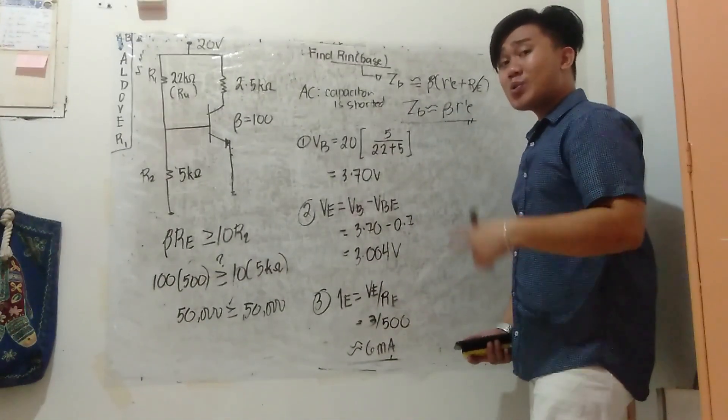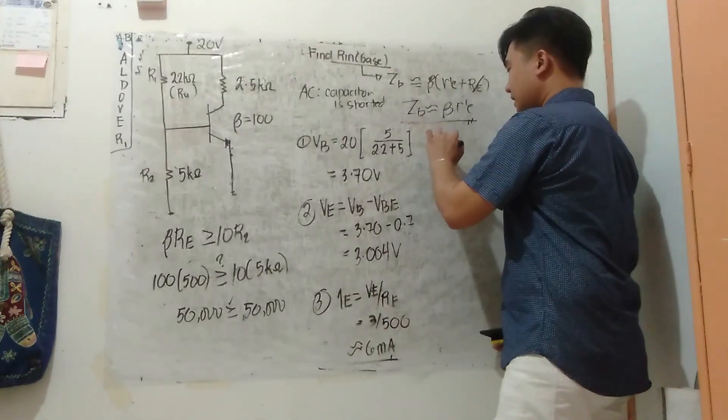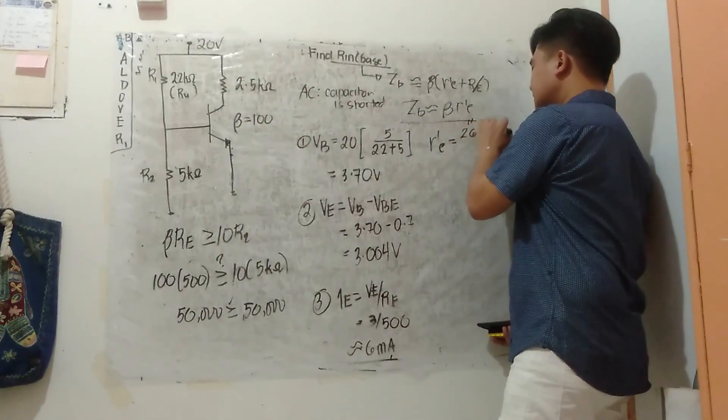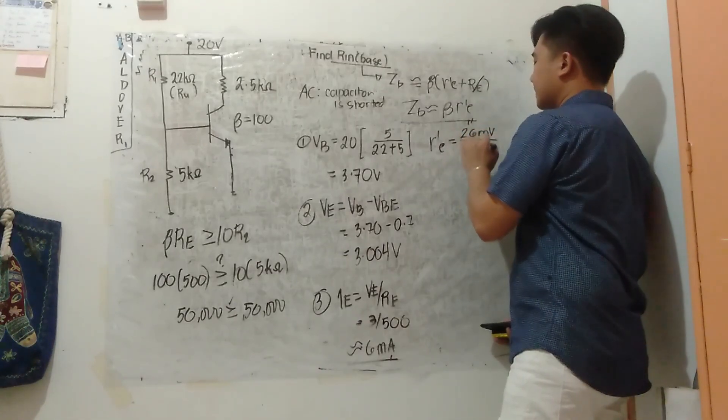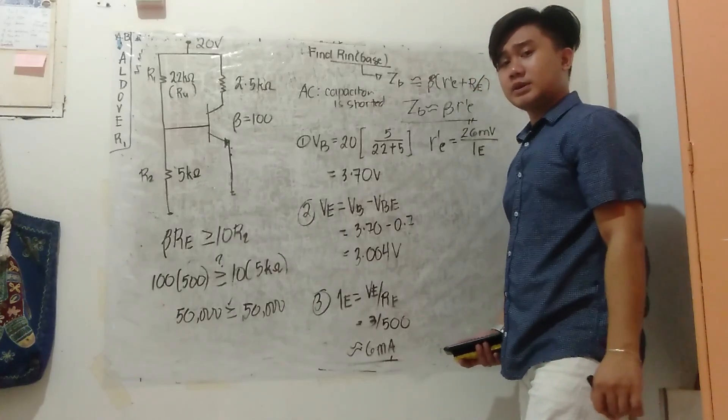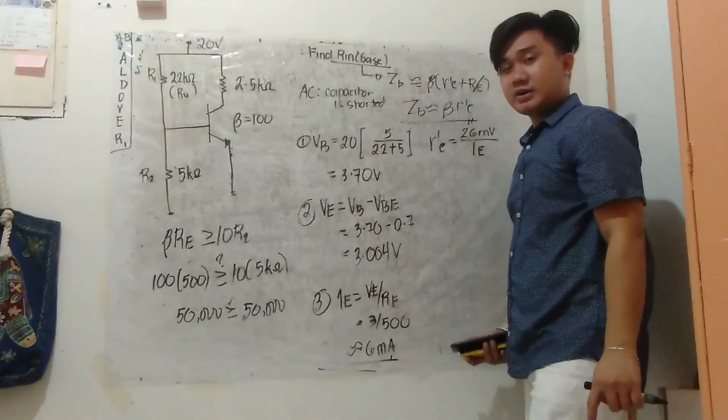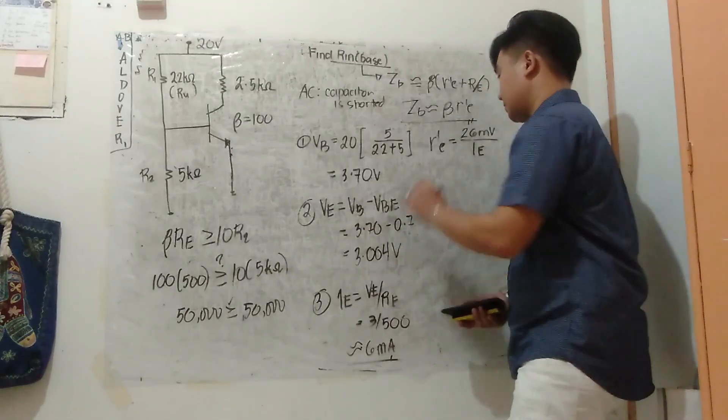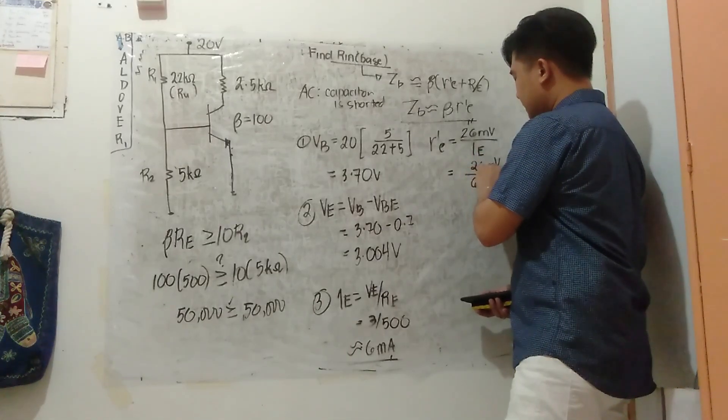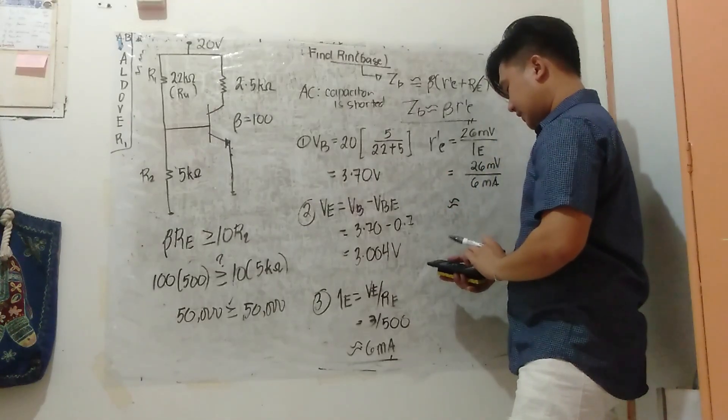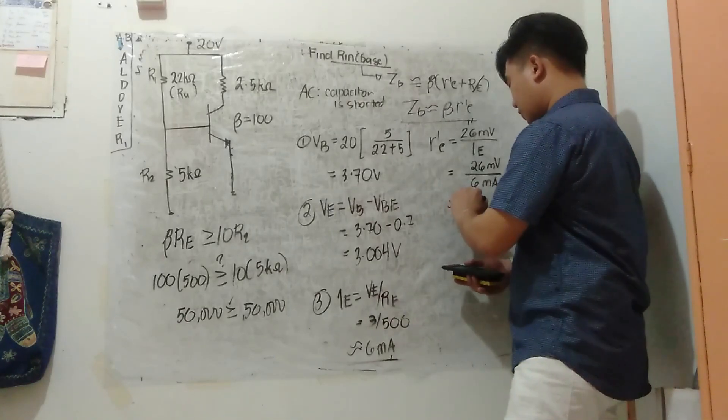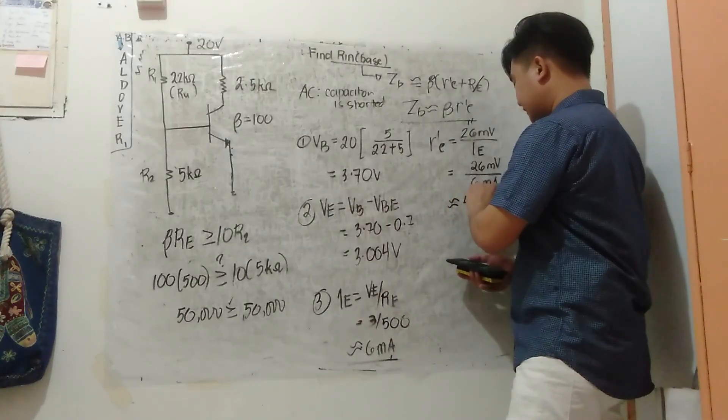When I have IE, I can find R'E. R'E is the AC resistance of the emitter, and that equals 26 millivolts over IE. Now guys, if you're using old versions of Boylestad or Floyd, that's 25 millivolts, but we're updated now, it's 26 millivolts. So that's 26 millivolts divided by 6 milliamperes, approximately 4.33 ohms.